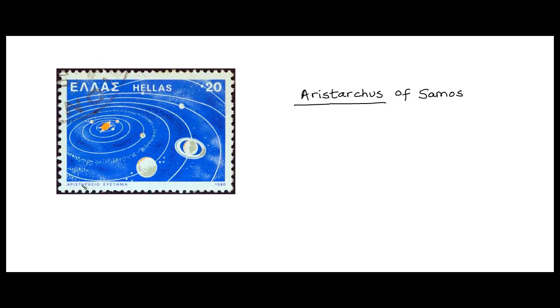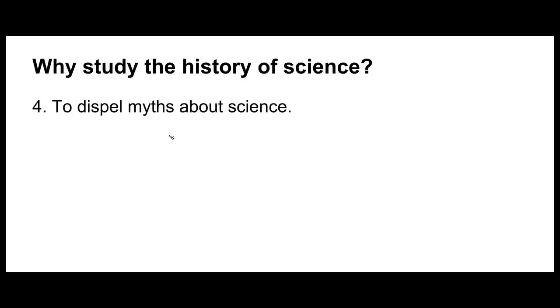So you can see Aristarchus' name mentioned over here and you can see a heliocentric view of the solar system here with the sun at the center and all the planets revolving around the sun. So this is the fourth reason for studying the history of science: to dispel myths about science.